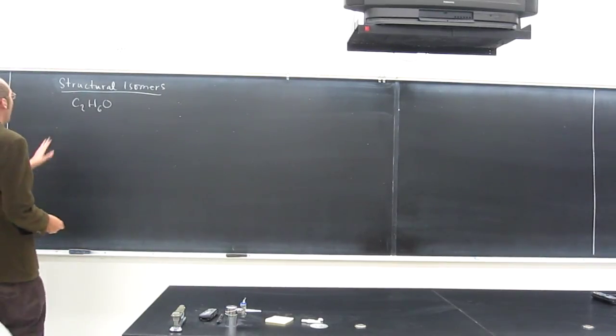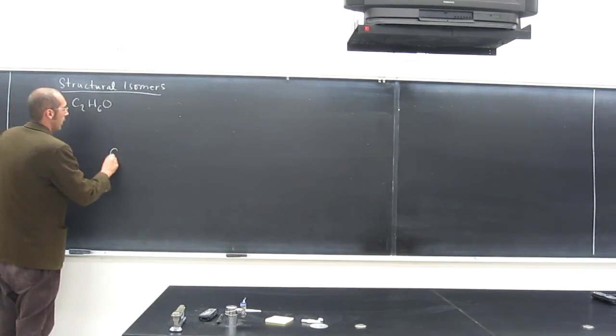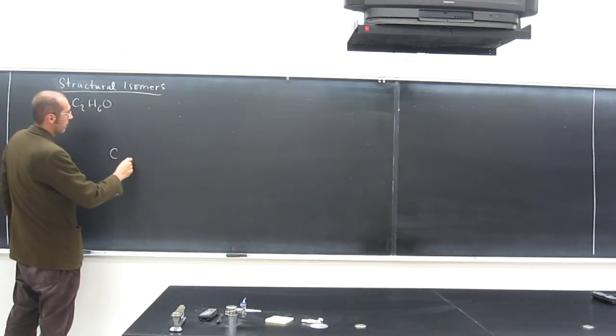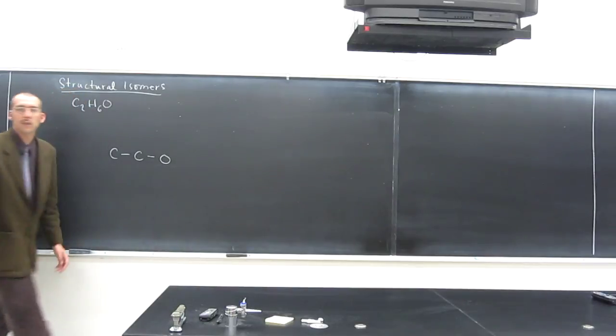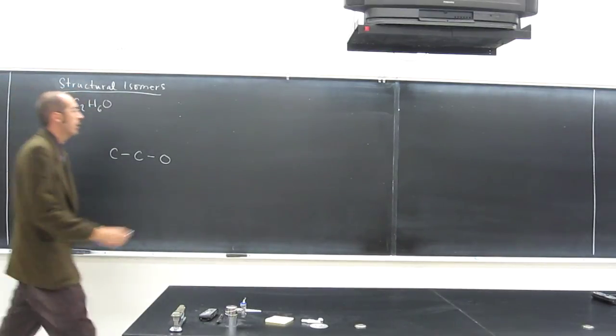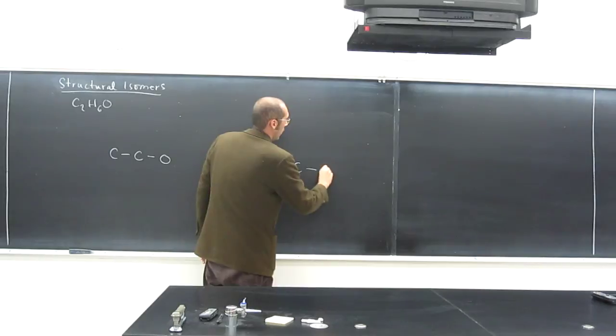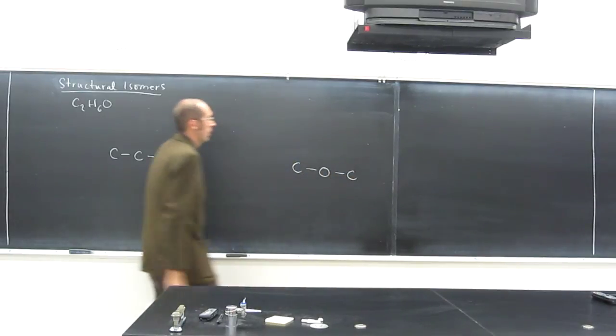So you can imagine since we have two carbons and an oxygen, we can arrange carbon, carbon, oxygen like that, or we could arrange them carbon, oxygen, carbon.